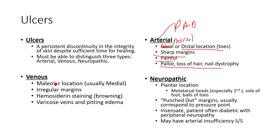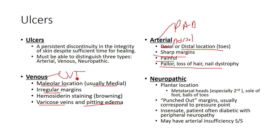Venous lesions tend to be more medial, maybe more on the medial malleoli. They'll have more irregular, jagged margins. You may also see hemosiderin staining or browning of the legs, related to venous stasis. You'll also see varicose veins and pitting edema in these patients — basically concomitant signs of chronic venous insufficiency.